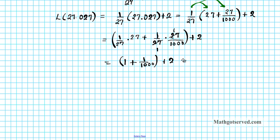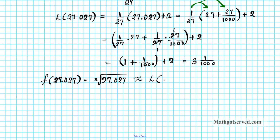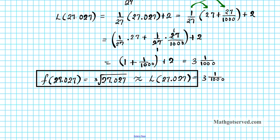Our final answer is 3 and 1 over 1,000. This means that f of 27.027, which is the cube root of 27.027, can be approximated with the linearization of the function at 27.027, which equals 3 and 1 over 1,000.